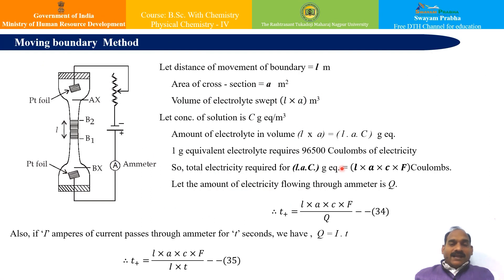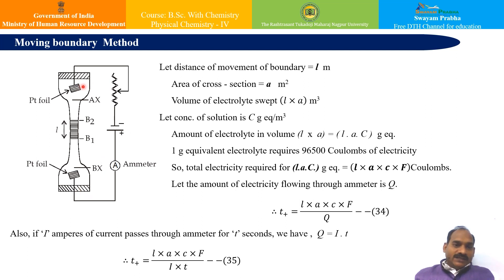The moving boundary method is another method for determination of transport number. In this method, the experimental arrangement is as shown in the figure. In this arrangement, a glass tube fitted with two platinum electrodes is used. If I want to find out the transport number of cation A+, I consider the electrolyte AX, and another electrolyte BX is selected such that the anion is common in both electrolytes AX and BX.